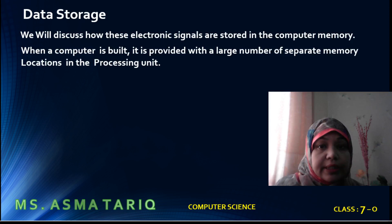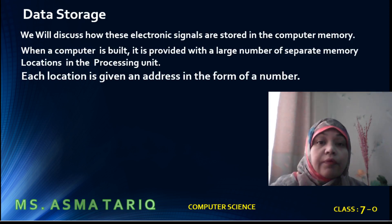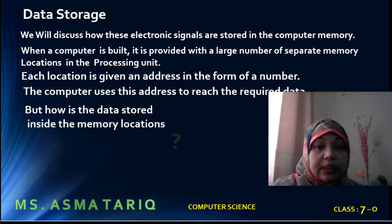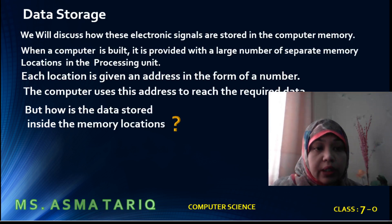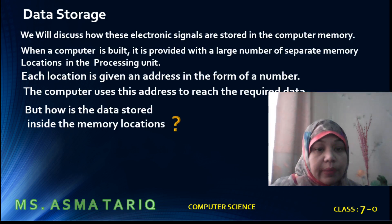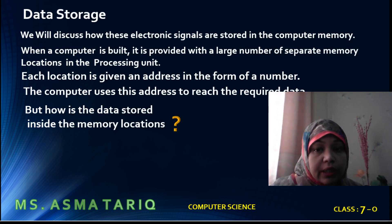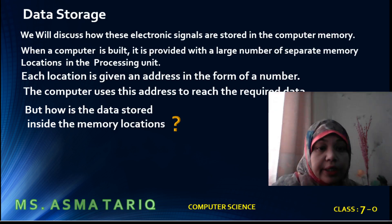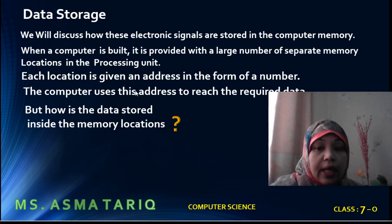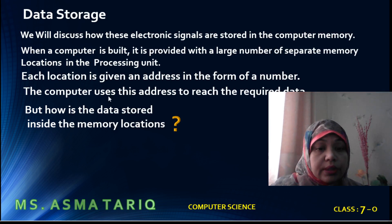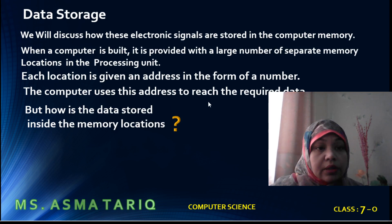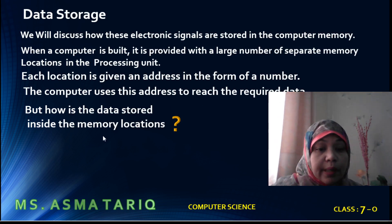Let us start — what is data storage? We will discuss how electronic signals are stored in the computer memory. When a computer is built, it is provided with a large number of separate memory locations in the processing unit. Each location is given an address in the form of a number. The computer uses this address to reach the required data. But how is the data stored inside the computer memory locations?